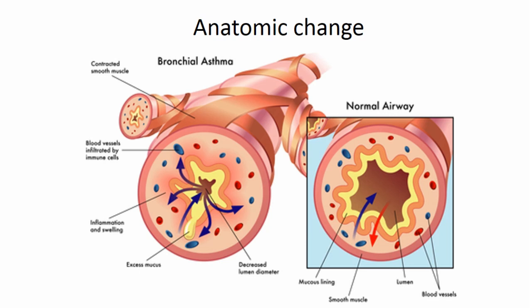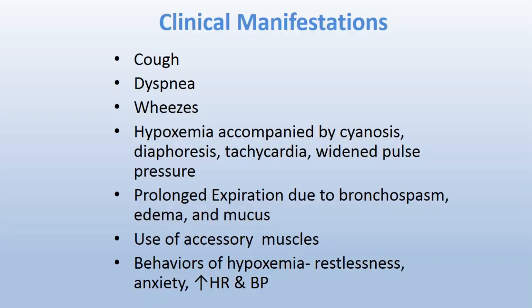Looking at the anatomical changes: in the diagram of the normal airway, when bronchioles are not affected by an asthmatic trigger, they are well open, allowing air to flow freely with no tenderness, swelling, or excess mucus. During an asthmatic attack, there is excess mucus production, swelling from inflammation, decreased lumen diameter as bronchioles narrow, and the patient begins producing that wheezing sound.